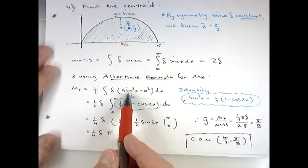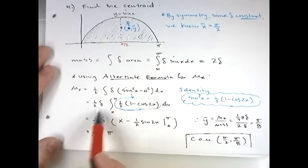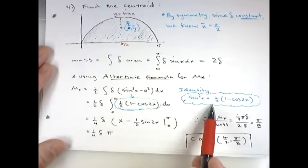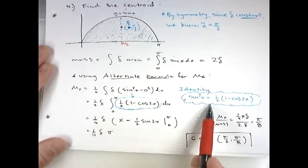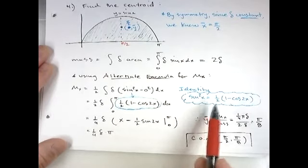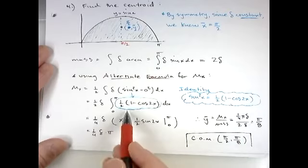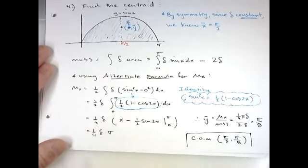So we have to integrate basically sine squared from zero to pi. Recall to integrate sine squared of x you need to use an identity and it's not the Pythagorean identity. It's the one half times (1 - cos(2x)) equals sine squared of x.